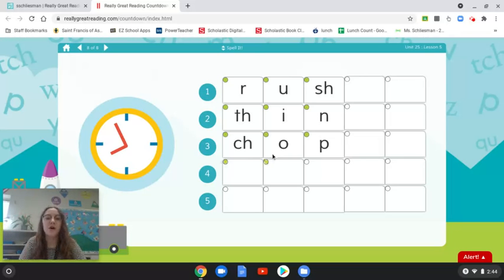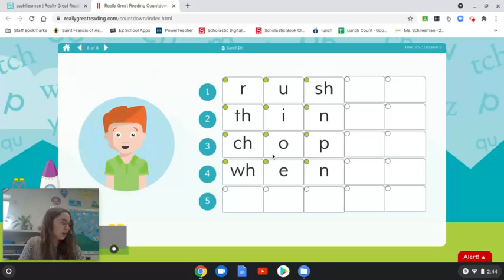Let's check our work. When has three sounds. W. Eh. N. When. Our next one is Rick. Rick is a name. Let's stretch it. Rick. R. I. K. Rick. Ready? Pause.